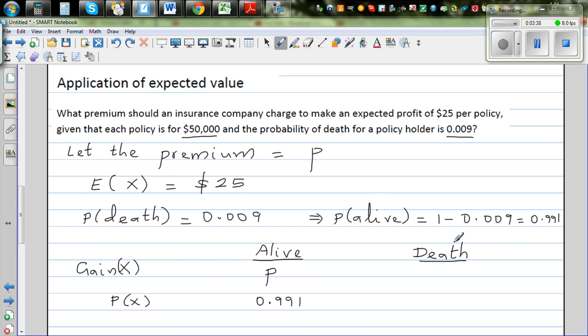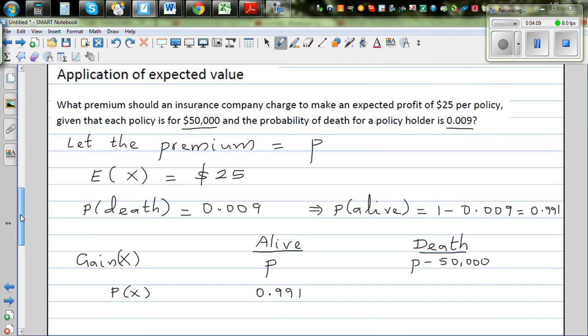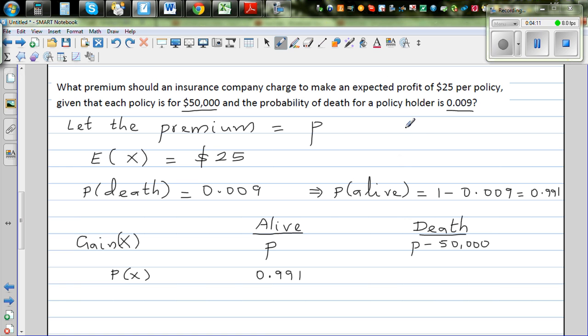Now if the policy holder is alive, they would gain the premium, and the respective probability of that happening is 0.991. The other scenario is the gain would be P minus 50,000, because if the person dies the insurance company has to pay this 50,000. The premium minus 50,000 because the insurance contract starts after the person pays the premium. The probability for that thing to happen is 0.009.